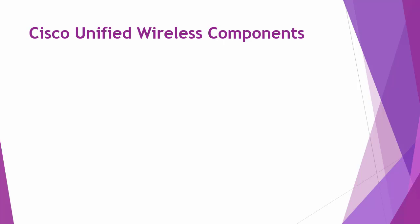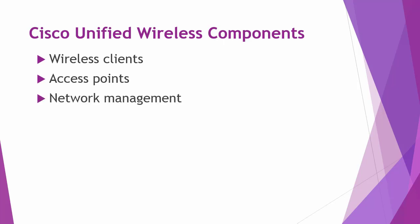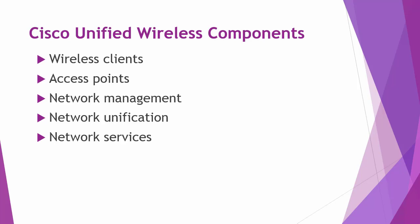The Cisco Unified Wireless Network concept includes the following elements: wireless clients such as laptops and workstations; access points providing access to the wireless network; network management accomplished through the network wireless control system, a centralized management tool for design and control of wireless networks; network unification, where the wireless LAN system supports wireless applications by offering unified security policies such as quality of service and RF management — handled by wireless LAN controllers; and network services including mobility services such as guest access, voice services, location services, and threat detection and mitigation.